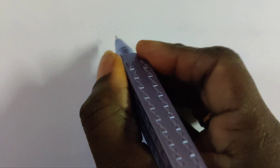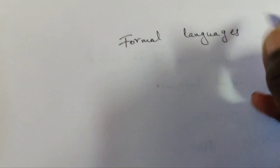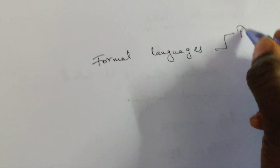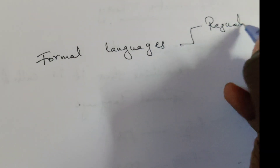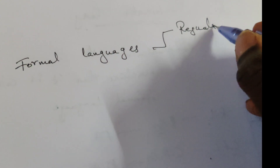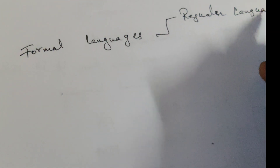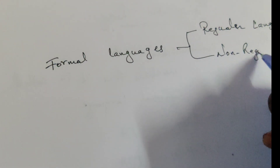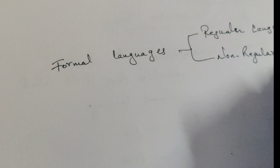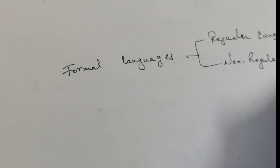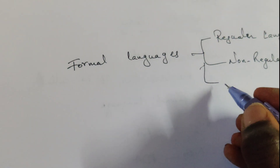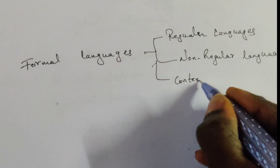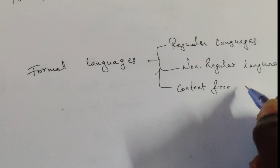We have seen what formal languages are — such as regular languages, non-regular languages, and context-free languages.